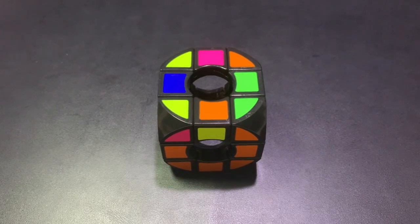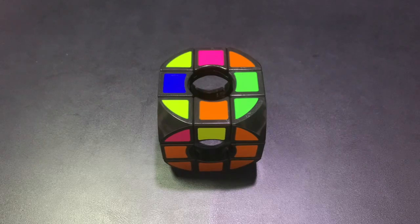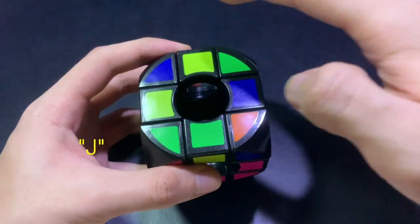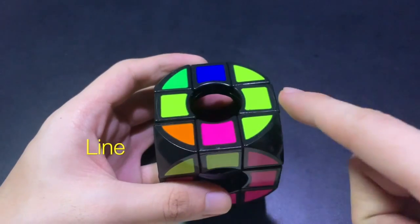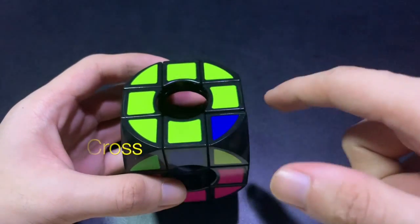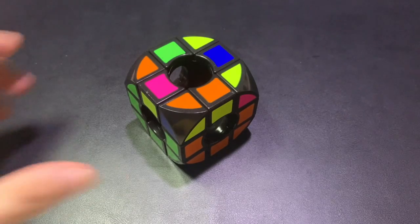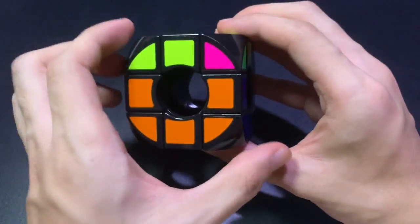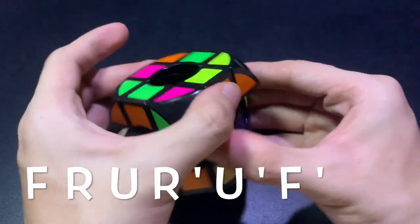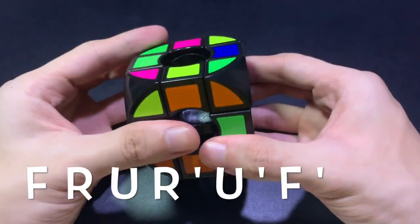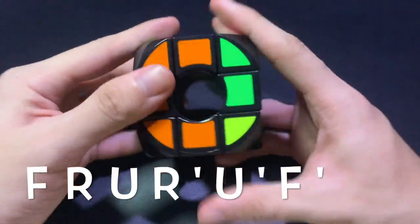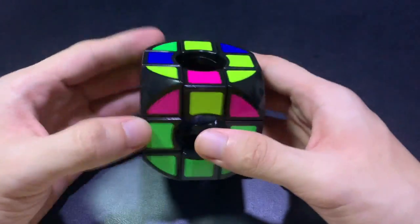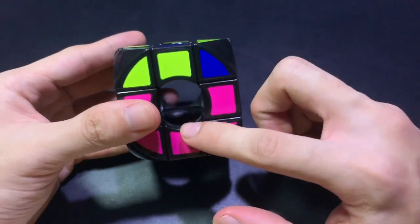So after solving the second layer, like the 3x3, you can end up with 4 possible outcomes. So you have nothing. You can have the j, you can have the line. Finally, you can have the cross solved for you. Just to recap, you can do this algorithm three times if you don't have any yellow edges correct. So it's f, r, u, r prime, u prime, and f prime. And then you turn the cube two times, like 1, 2.